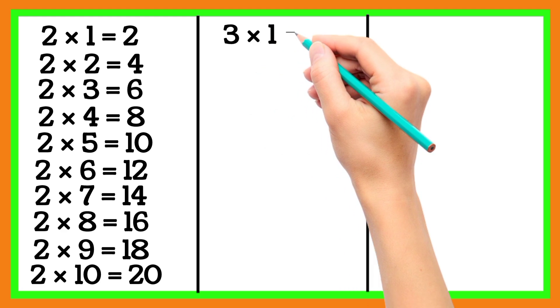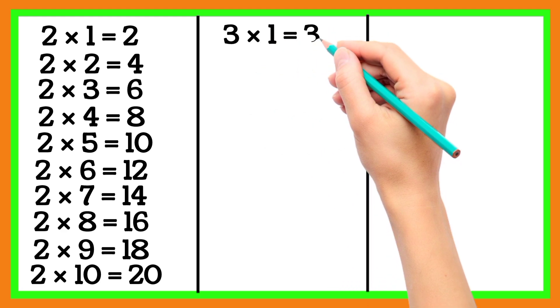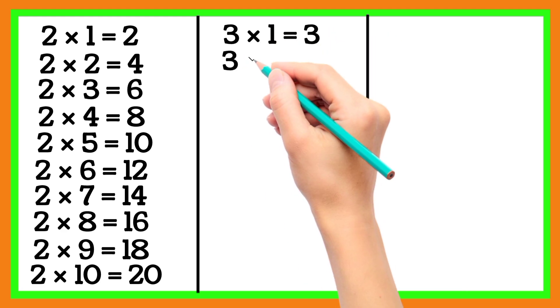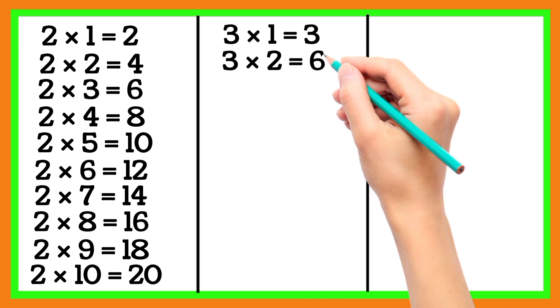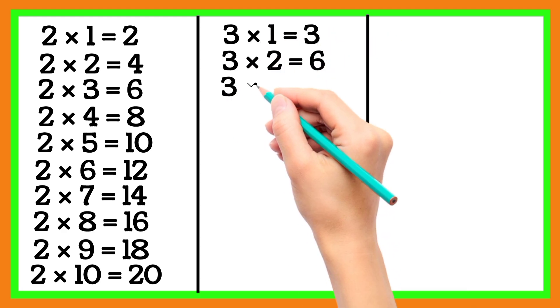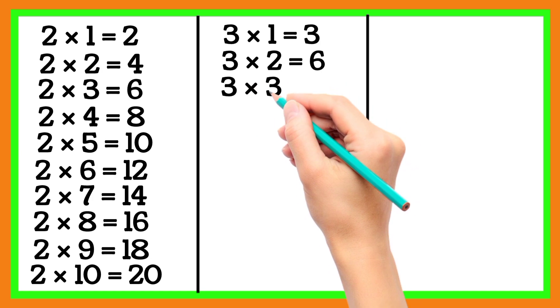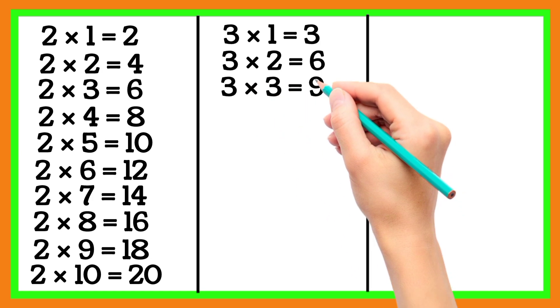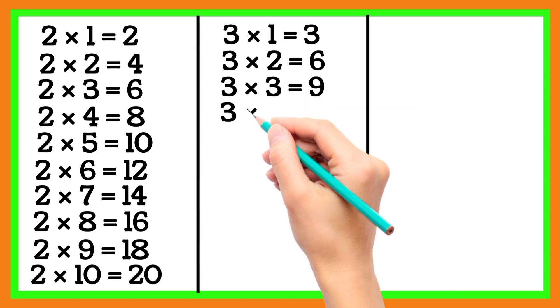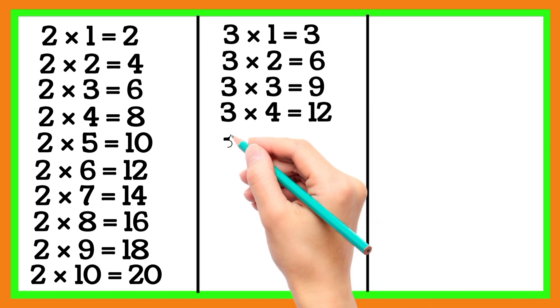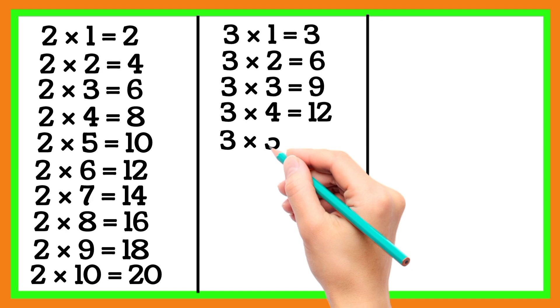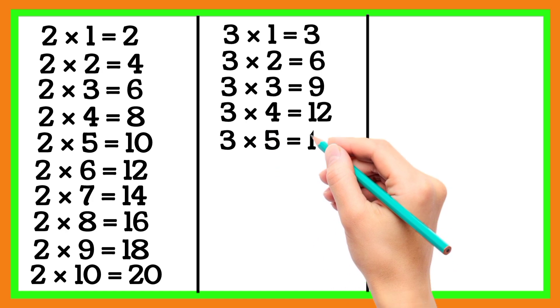3 1 is 3, 3 2 is 6, 3 3 is 9, 3 4 is 12, 3 5 is 15.